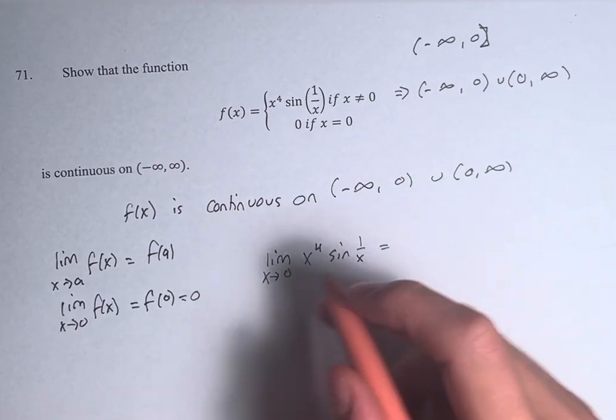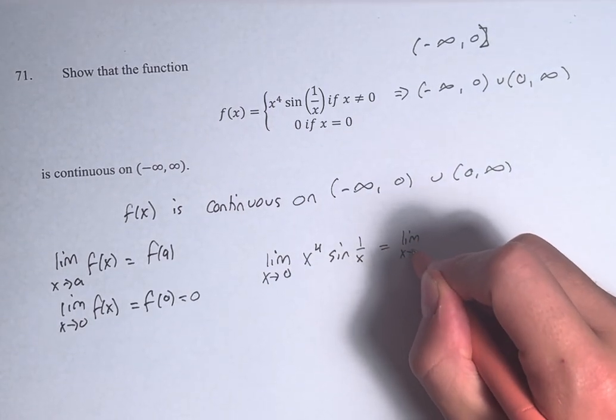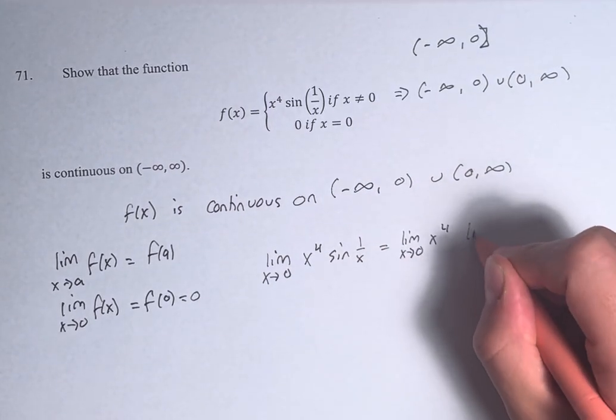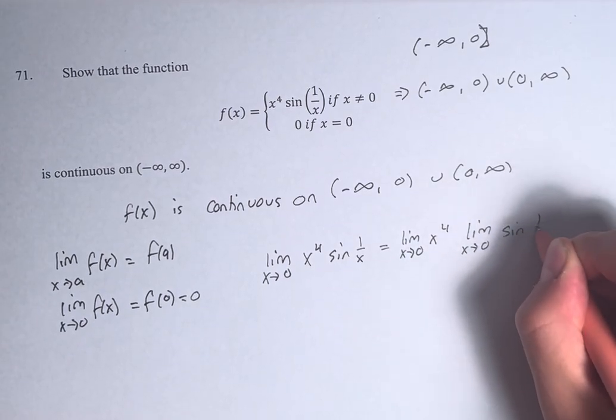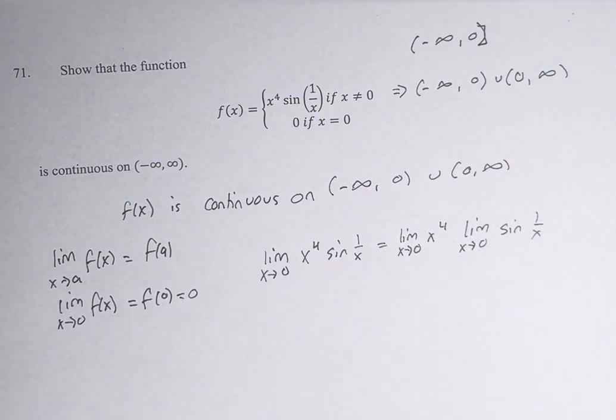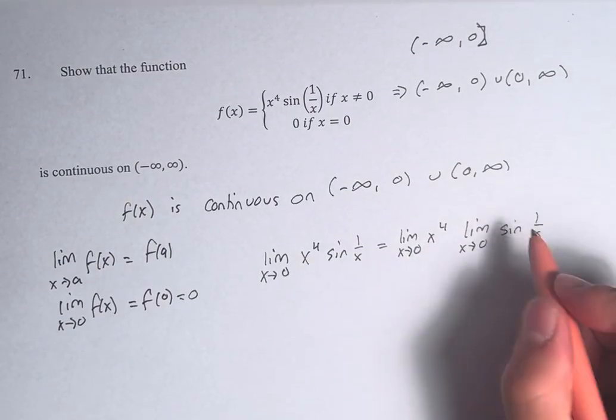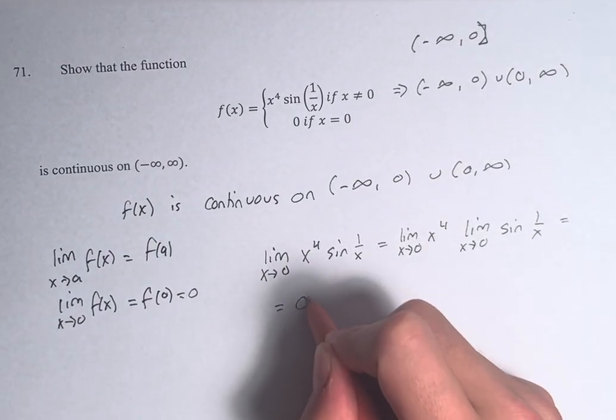Well, we can say that this is equal to the limit of x to the fourth times the limit of sine of 1 over x. So the limit as x approaches 0 of x to the fourth, that's just 0 to the fourth.